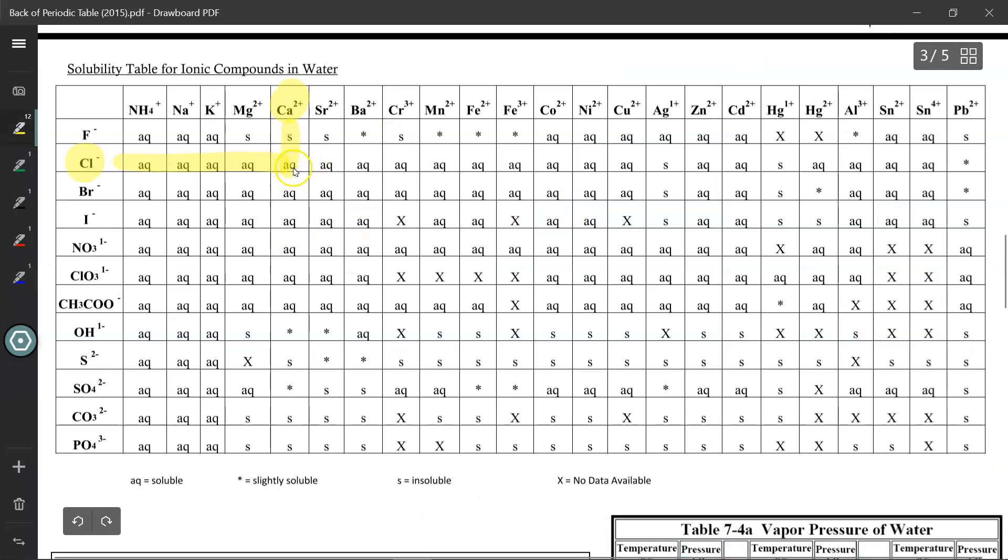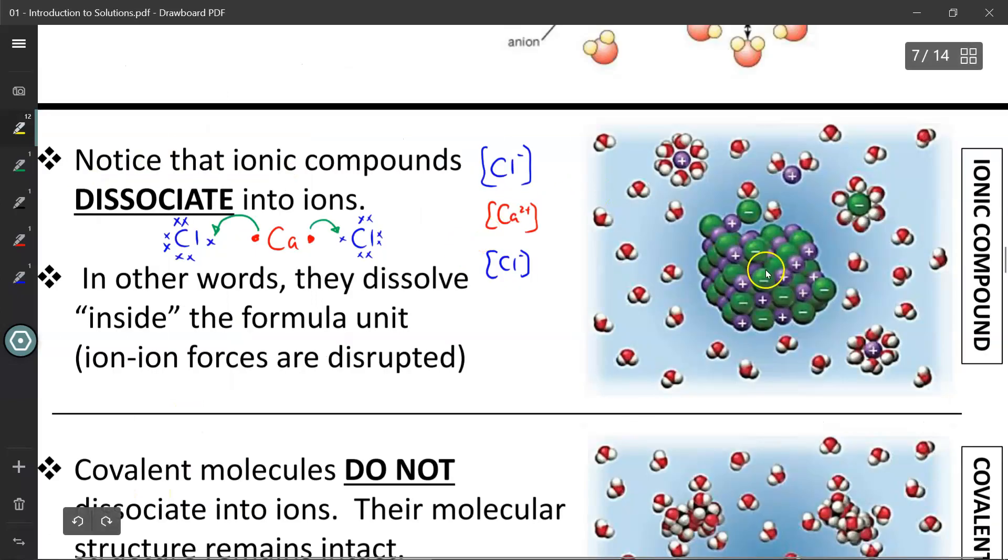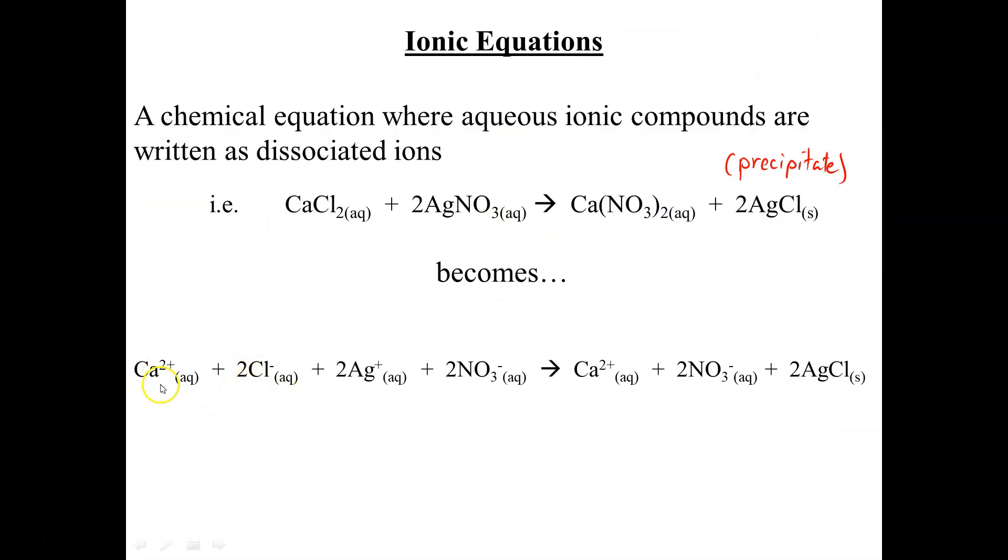From our solubility chart, we saw the calcium chloride is soluble in water. It is going to be an aqueous solution, and so the water molecules will pull them apart ion by ion, surrounding the chlorine ions and the calcium ions. Because they are now separated from each other, we say they have been dissociated, and we can show them as individual ions in this ionic equation.